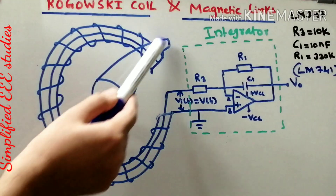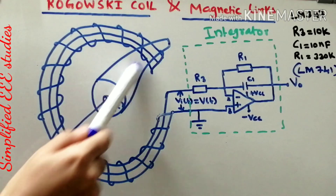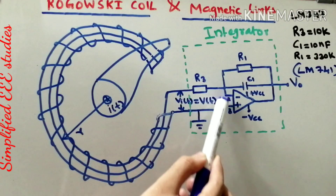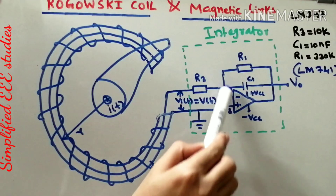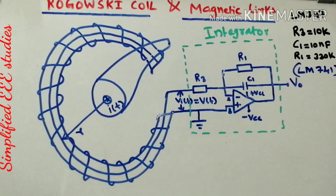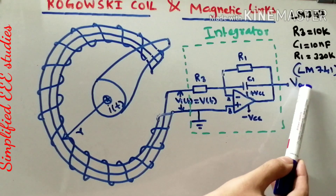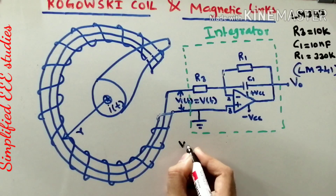Whenever an impulse current passes through the conductor, due to electromagnetic induction, a voltage is generated across the Rogowski coil. That voltage passes through the integrator so you can calculate the overall output across the Rogowski coil. Let us now do the basic calculation to find the output voltage as a function of time.